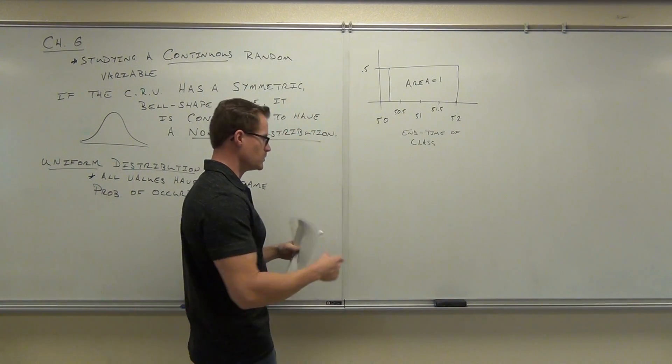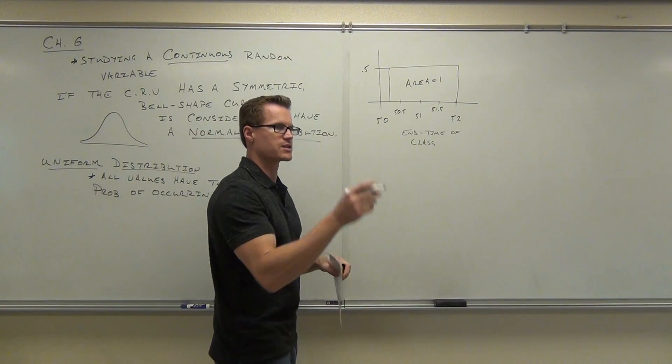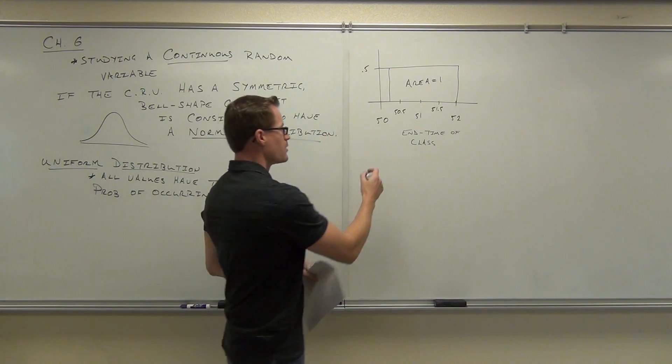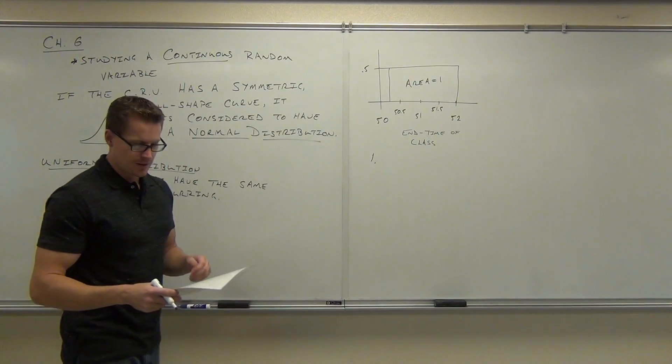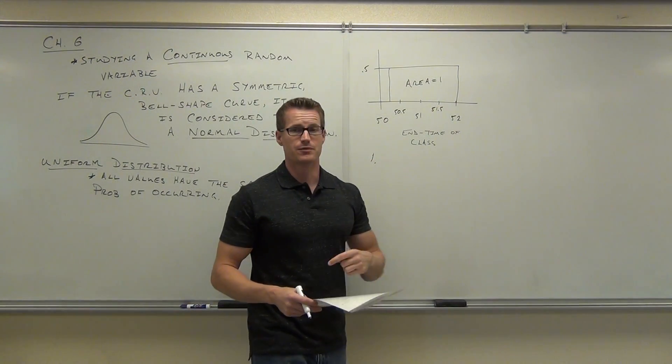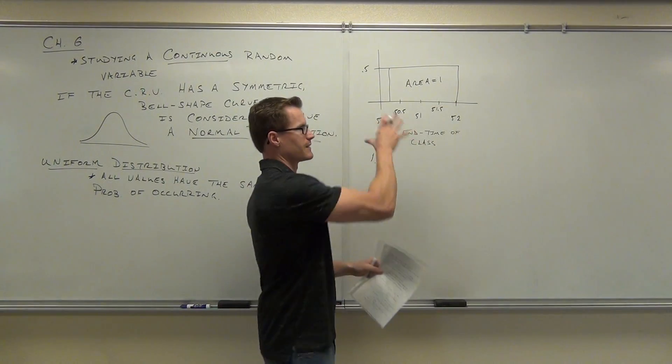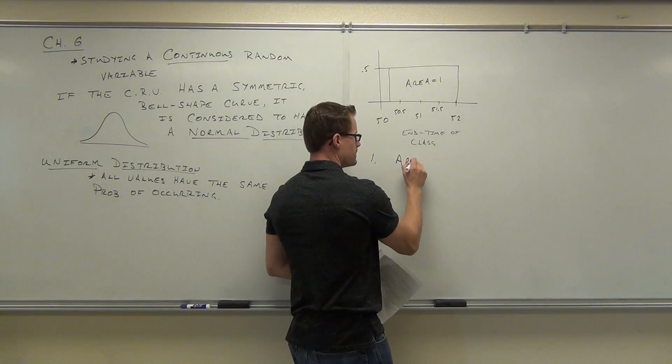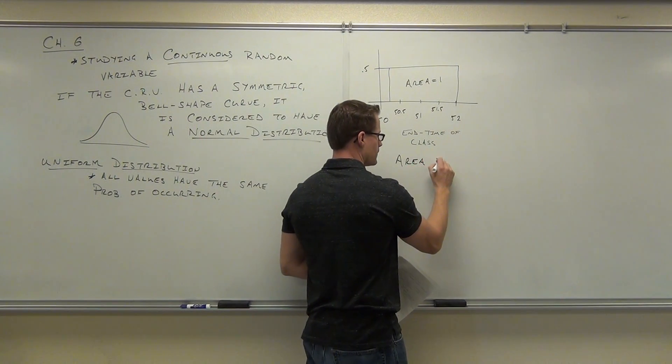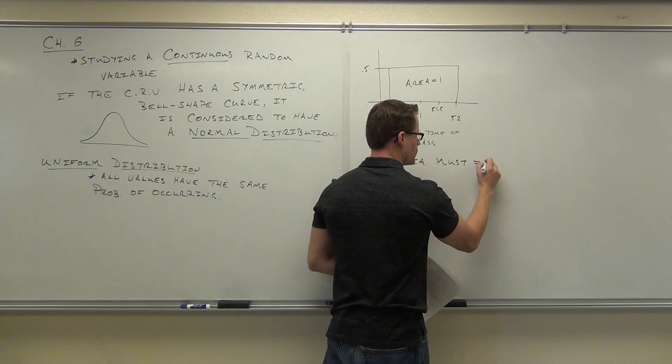So instead, what we do is we realize a couple things about this, and then we calculate the probability of a range. First thing we're going to realize, it's called a density curve.